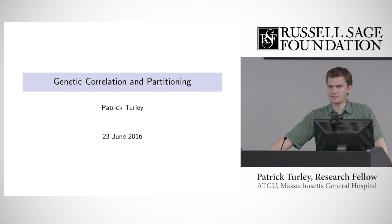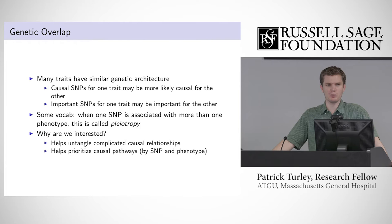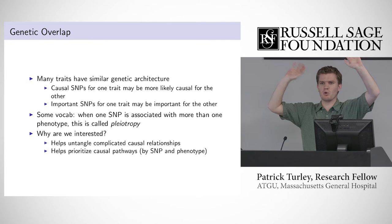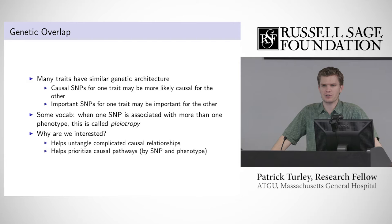We're going to talk about genetic correlation and partitioning, starting with genetic overlap. A lot of traits have really similar genetic architecture. If we find a SNP that is causal for some trait like educational attainment, it's more likely to also be associated with things like cognitive performance or schizophrenia. One SNP being associated with a variety of phenotypes is called pleiotropy — it means that genes do more than one thing.